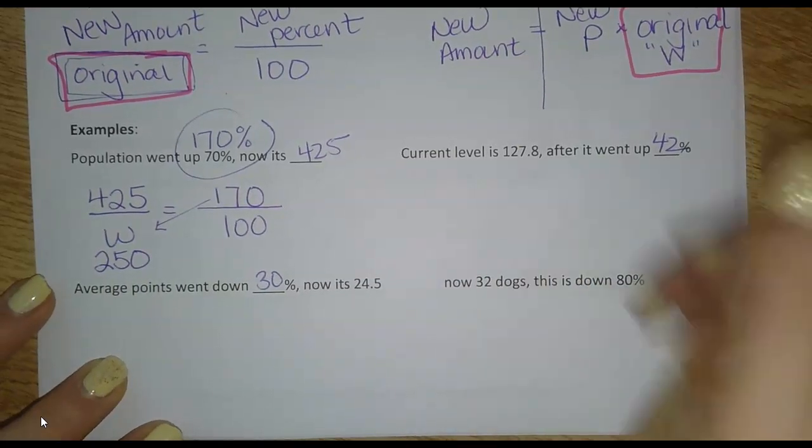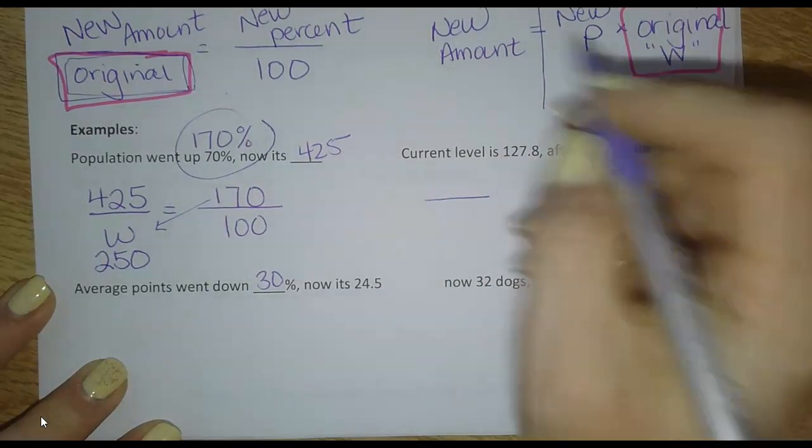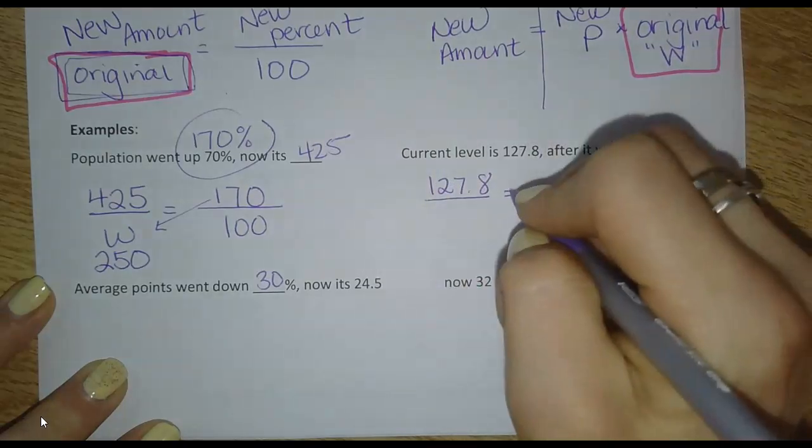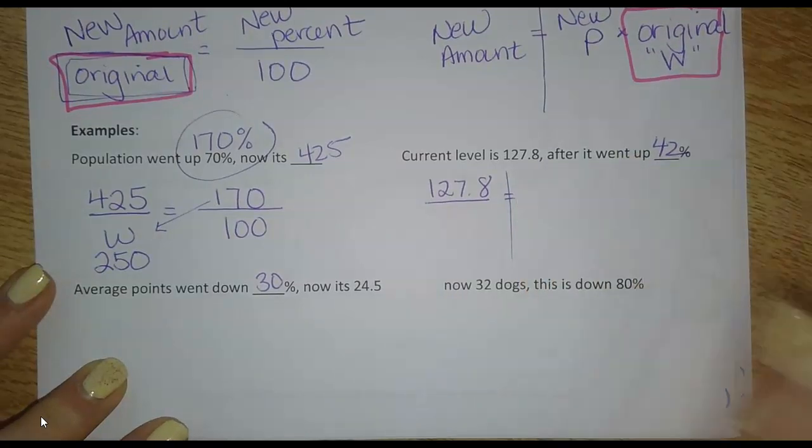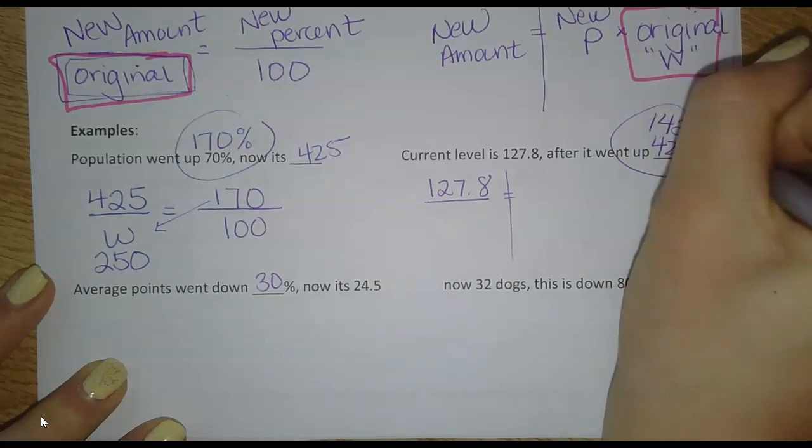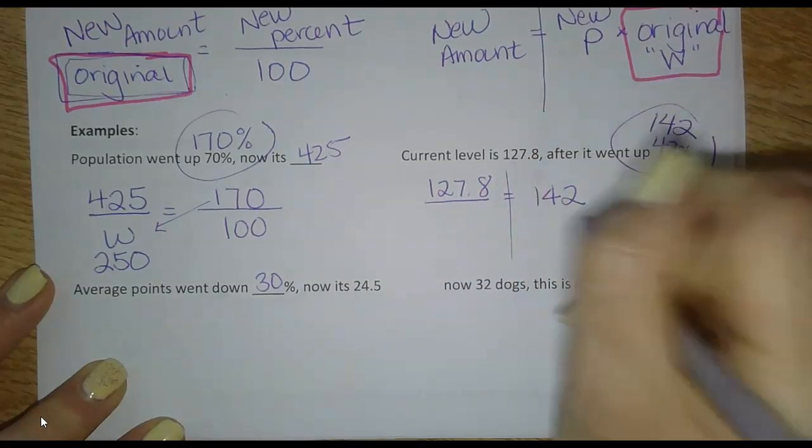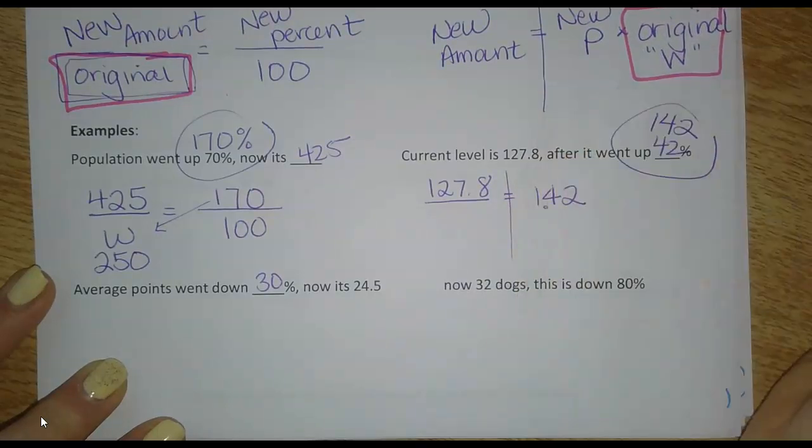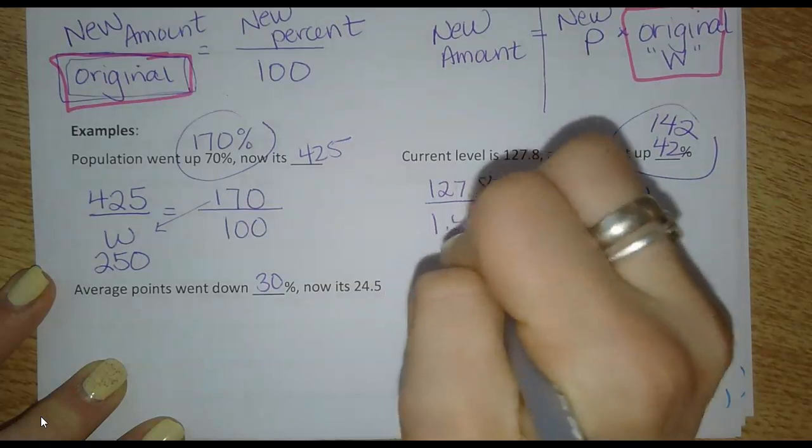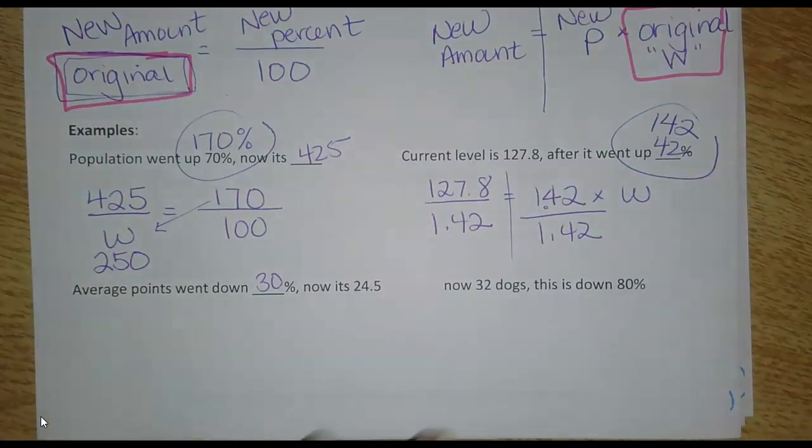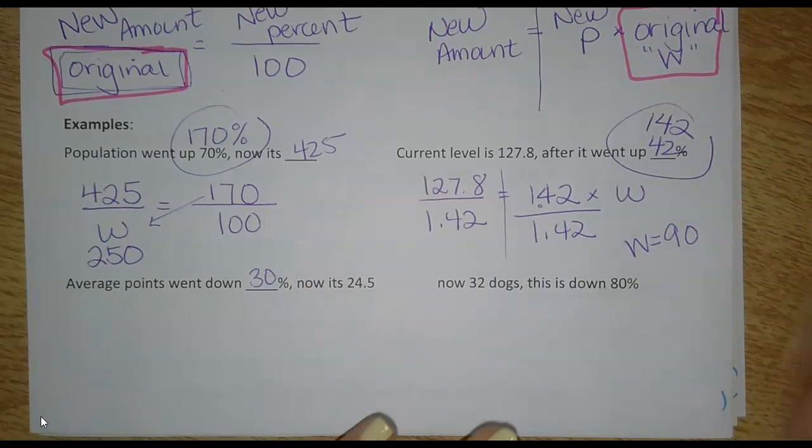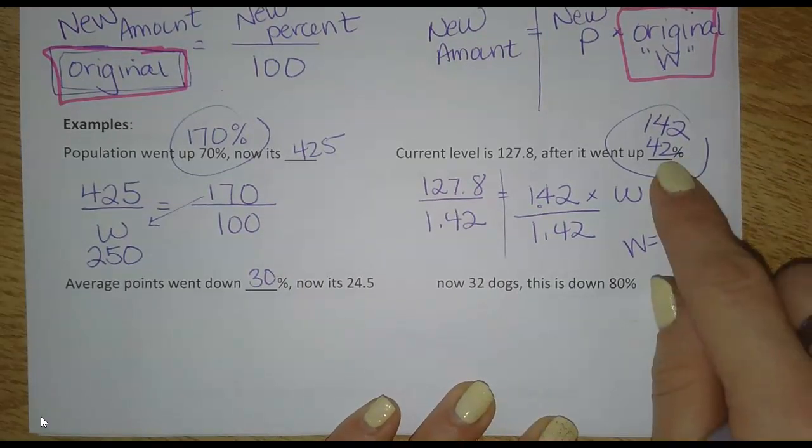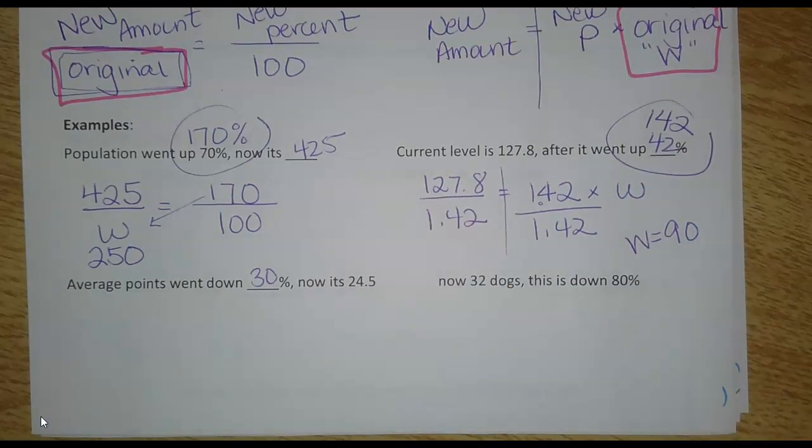Let's do one with the equation. Current level is 127.8. That's the new amount. And that's after it went up 42%. If it went up 42%, that means now it's at 142%. So my new percent is 1.42 for the P as a decimal, and then times W. So I'm going to divide by 1.42 on both sides. Put that in your calculator. And I got that the whole, or the original, was 90. So let's check and see if that's reasonable. It started at 90, went up an extra 42%, and now it's at 127. Yep. That seems good.